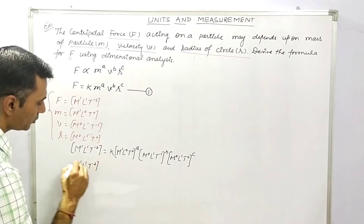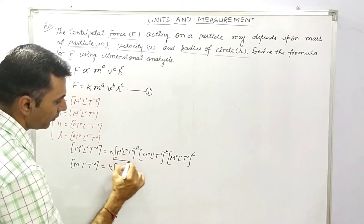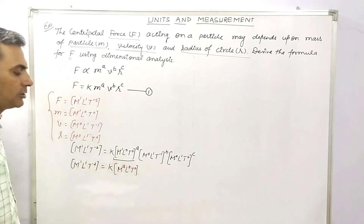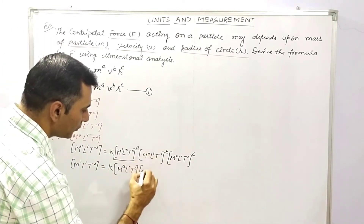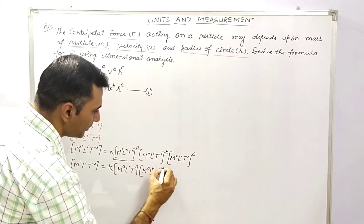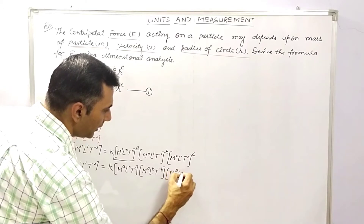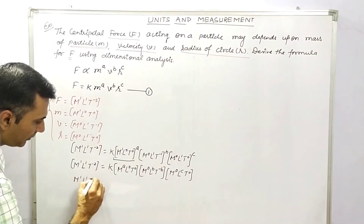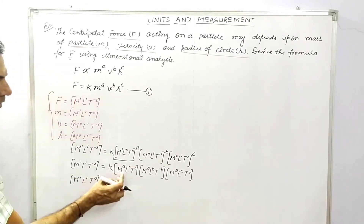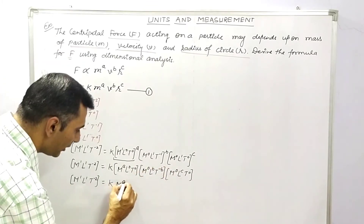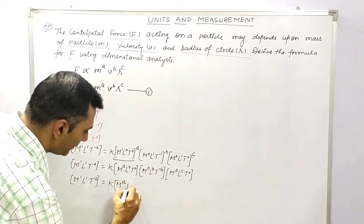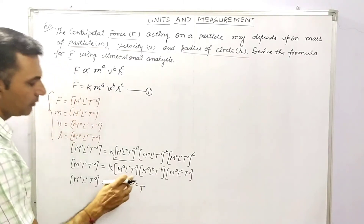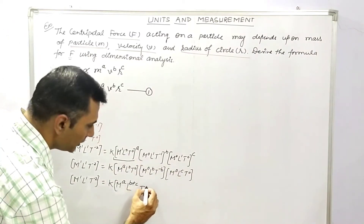Simplifying the right-hand side by multiplying powers: M¹L¹T⁻² = K times M^A times L^(B+C) times T^(−B). The total power of M on the right is A (since the other terms contribute 0), the total power of L is B + C, and the total power of T is −B.